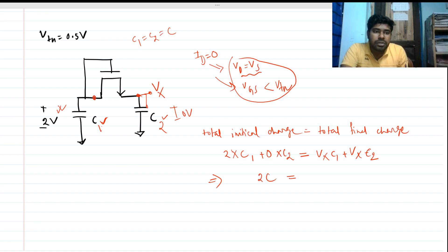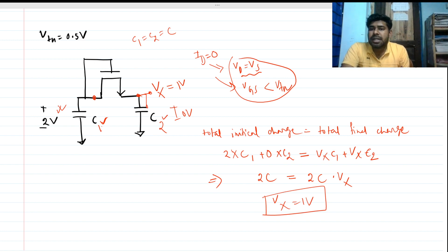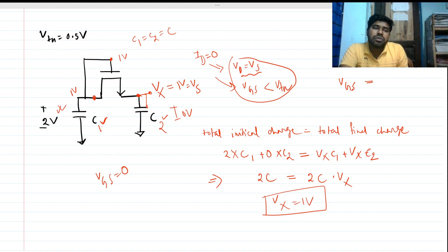Solving this, we get 2C equals 2C times Vx, so Vx equals 1 volt. But is this correct? If Vx is 1 volt, then VG is also 1 volt, and VS is also 1 volt, so VGS becomes zero. But we know VGS must be at least equal to Vtn for the MOSFET to conduct.